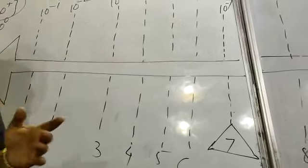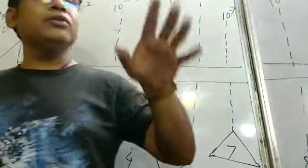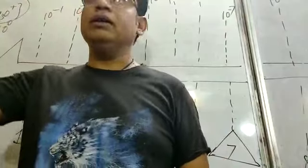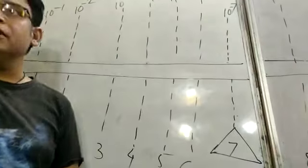And pH is also what? Logarithm of the reciprocal of hydronium ion concentration. That means, 1 by H3O positive. This is what I have told you about today.